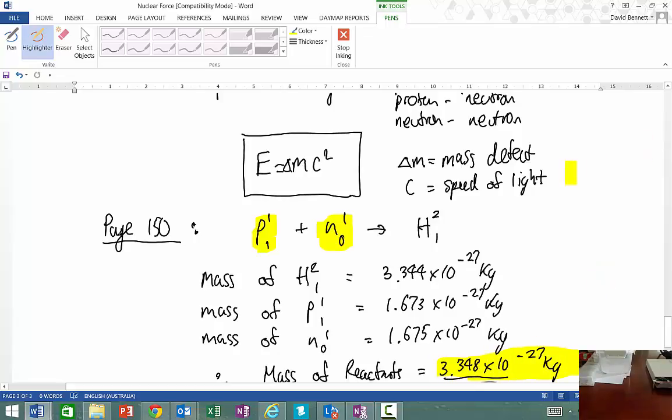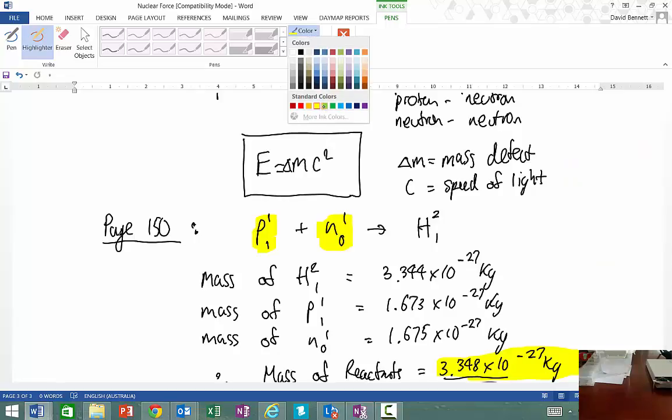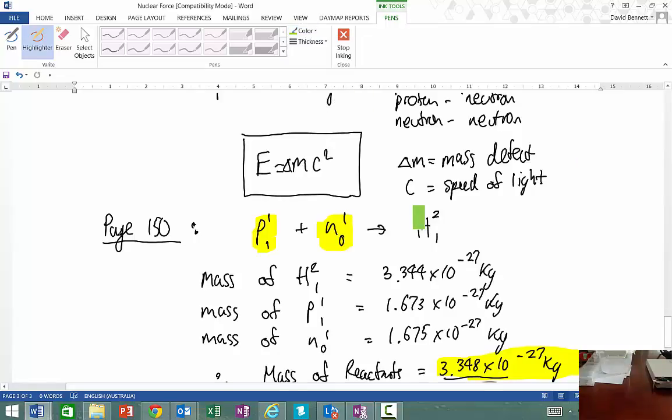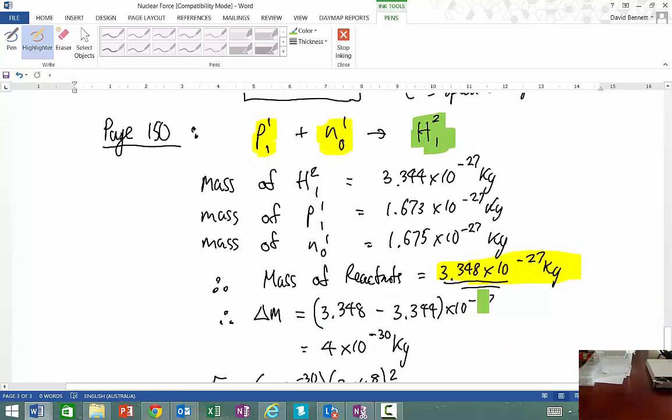Then we look at the mass of our products. The mass of our products is simply the mass of a deuterium atom. So therefore, the mass of a deuterium atom is equal to this one here.